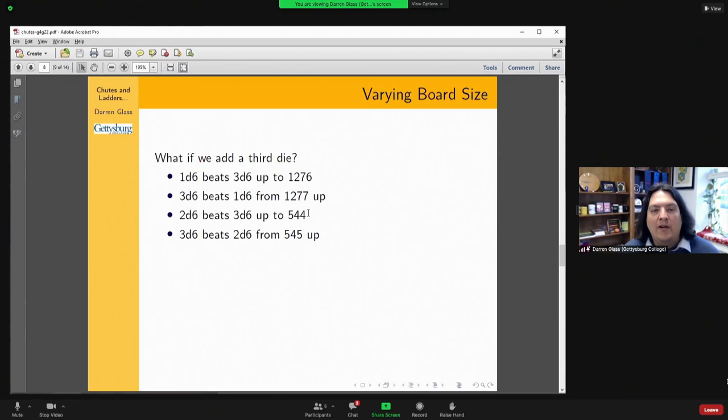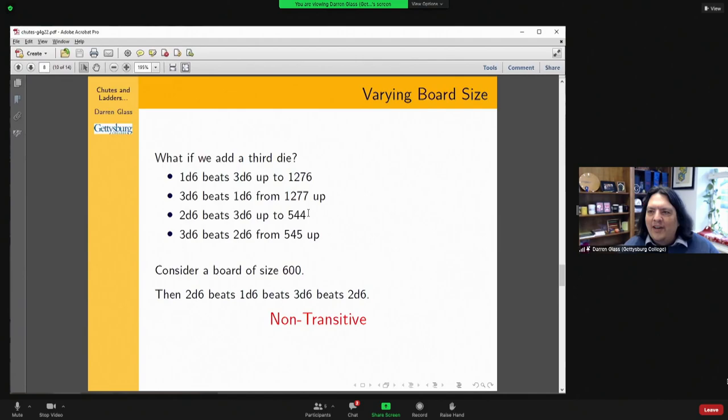If you notice these numbers though—and this is what I thought this crowd would be most interested in—think about what happens on a board of size 600. If you have a board of size 600 and I ask you, would you rather roll one die or two dice, you should choose two. If I ask you should you choose one die or three dice, you should choose one. If I ask you three dice or two dice, you should choose three. So there's this whole weird non-transitivity. And of course, Martin Gardner would love to turn this into some game where I let you choose your number of dice and then I choose my number of dice and I can always beat you. It's non-transitive.